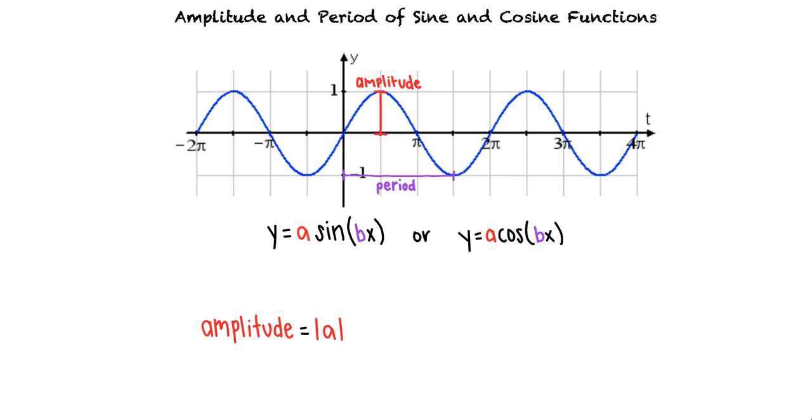The period tells us how often the wave will repeat itself. For f of x equals sine x or f of x equals cosine x, the period is 2 pi because the wave repeats itself every 2 pi units.